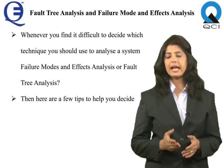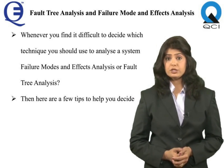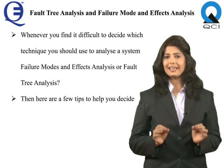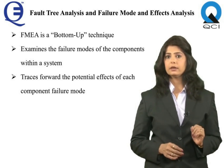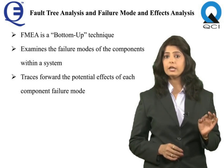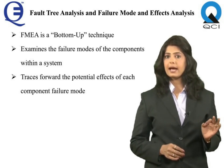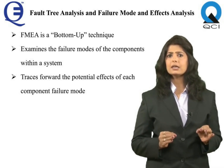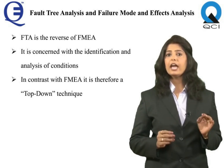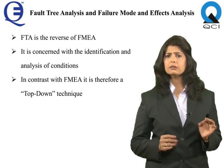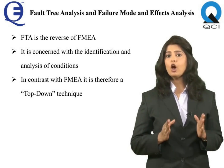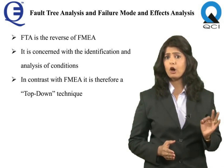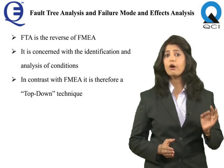Here are tips to help decide whether to use FMEA or FTA. Tip one: FMEA is a bottom-up technique which examines the failure modes of components within a system — the failure symptoms — and traces forward the potential effects of each component failure mode on system performance. As such, it is a cause-to-effect model. Tip two: FTA is the reverse of FMEA in that it is concerned with identifying and analyzing conditions, including component failures, that lead to a defined effect. It is therefore a top-down technique and an effect-to-cause model.